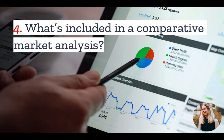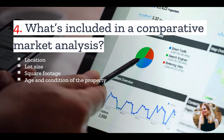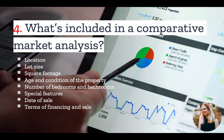Number four: what's included in a comparative market analysis? Different agents will have different standards. However, the agent should in general look at the following components when building their analysis: location, lot size, square footage, age and condition of the property, number of bedrooms and bathrooms, special features, date of sale, and the terms of financing and sale. These characteristics should be compared between the comp selected and the property in question to determine how to adjust sales data to better represent the projected price that your property may go for.